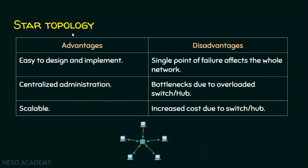Star topology has serious disadvantages too. A failure in the central node will affect the entire network — if the switch or hub fails, no communication can take place. If the central node is overloaded with traffic, the performance is affected, creating a bottleneck. You also have to spend money purchasing the hub or switch, increasing the overall cost.